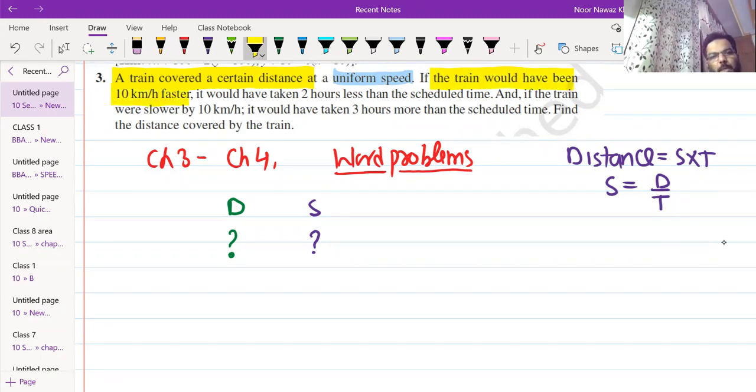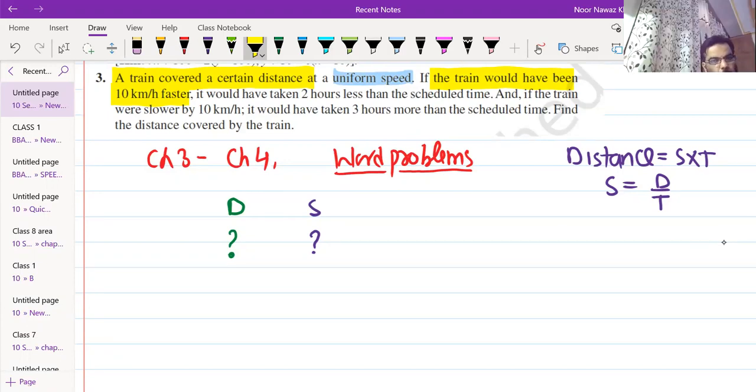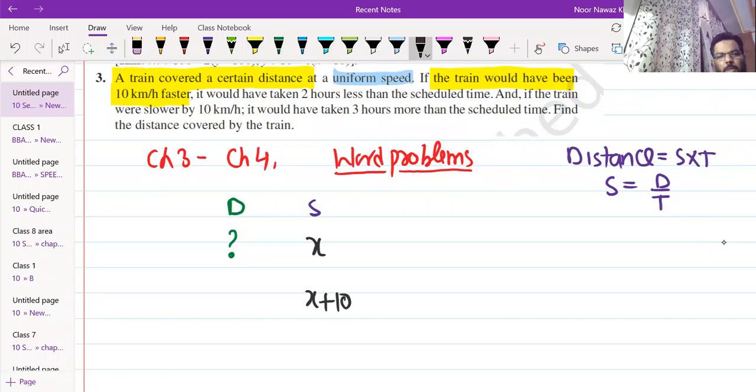X plus 10. Where is X? What is X? Yes. Good. In this case, he says if the speed is 10 km per hour faster, it was our general case, first case one. Any distance, any speed. Now in case two, if the speed is 10 km per hour faster.